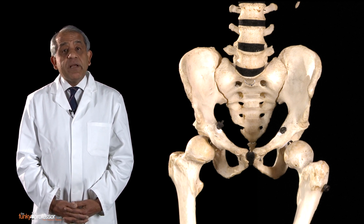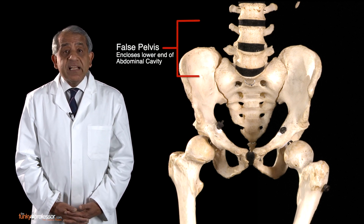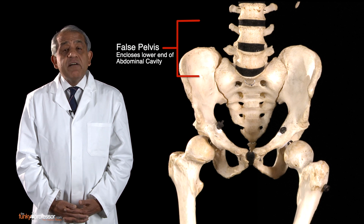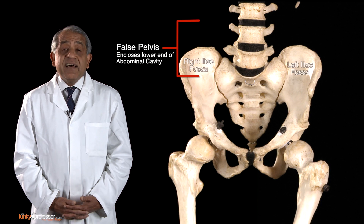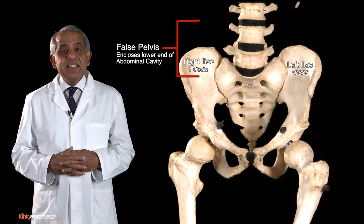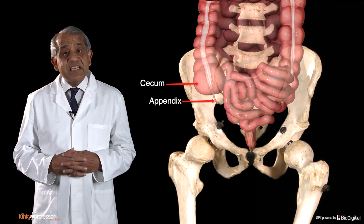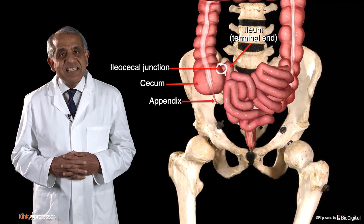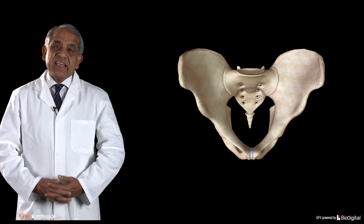Above the pelvic brim is the false pelvis, which encloses the lower end of the abdominal cavity. On either side, the inner surface of the hip bone forms the lateral boundary of the corresponding iliac fossa — thus you have right and left iliac fossae. The right iliac fossa typically contains the cecum, appendix, ileocecal junction, and terminal ileum. The left iliac fossa contains the sigmoid colon.